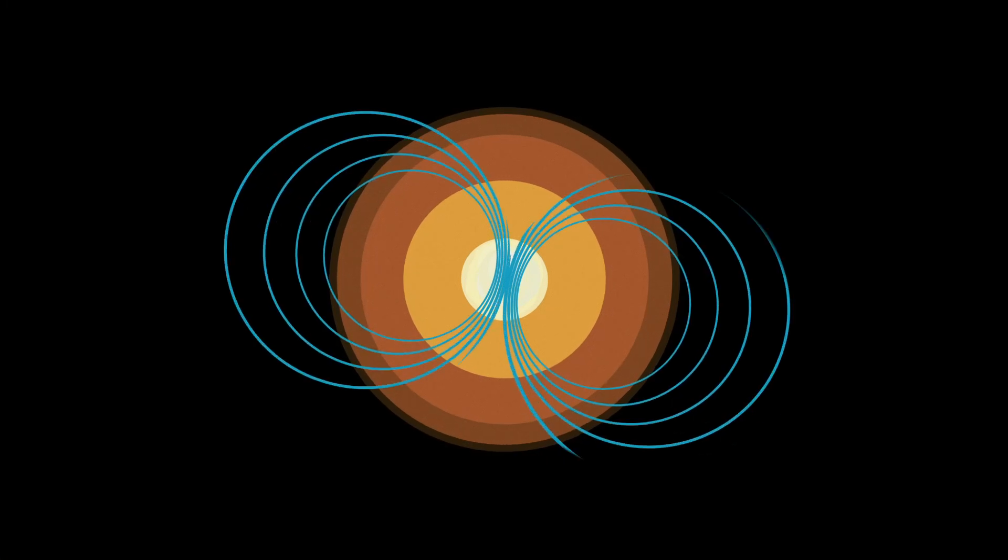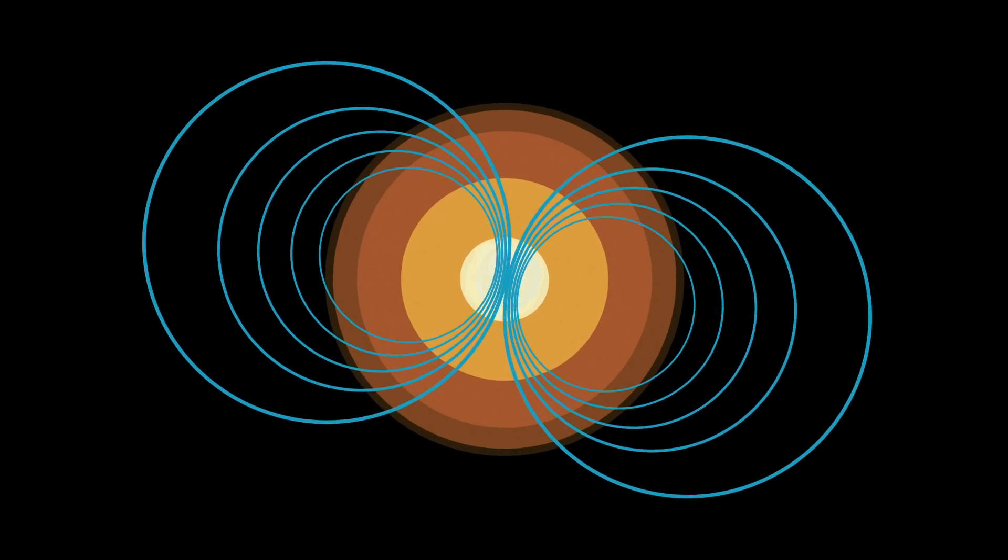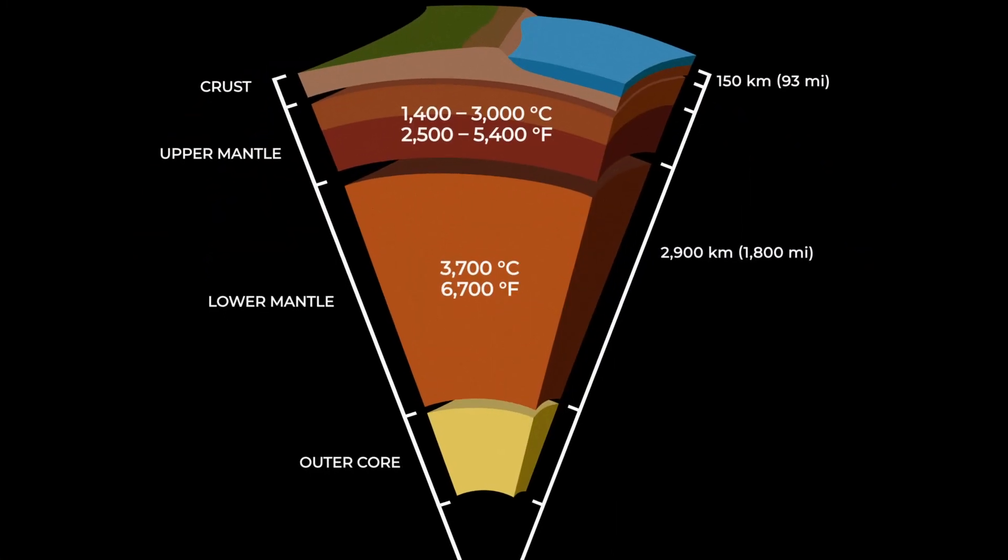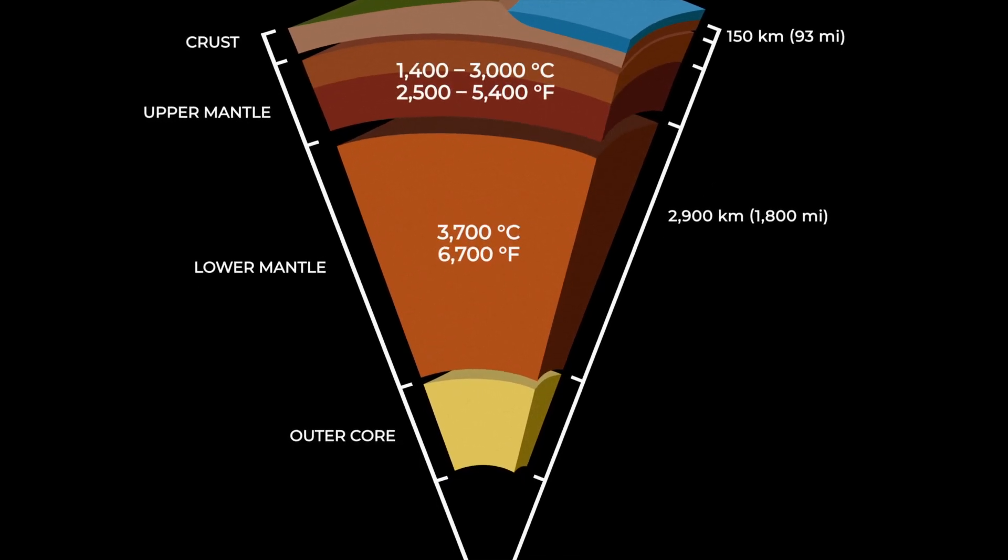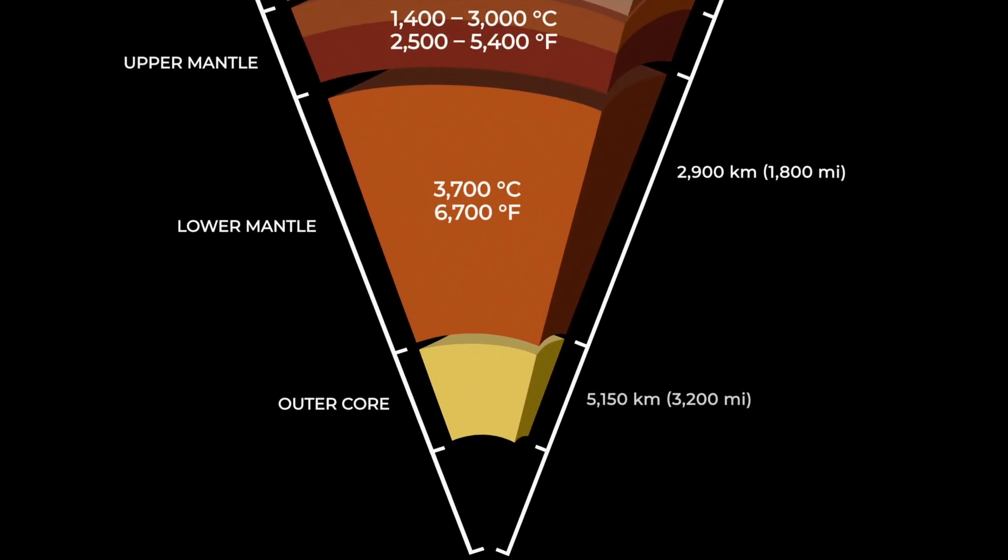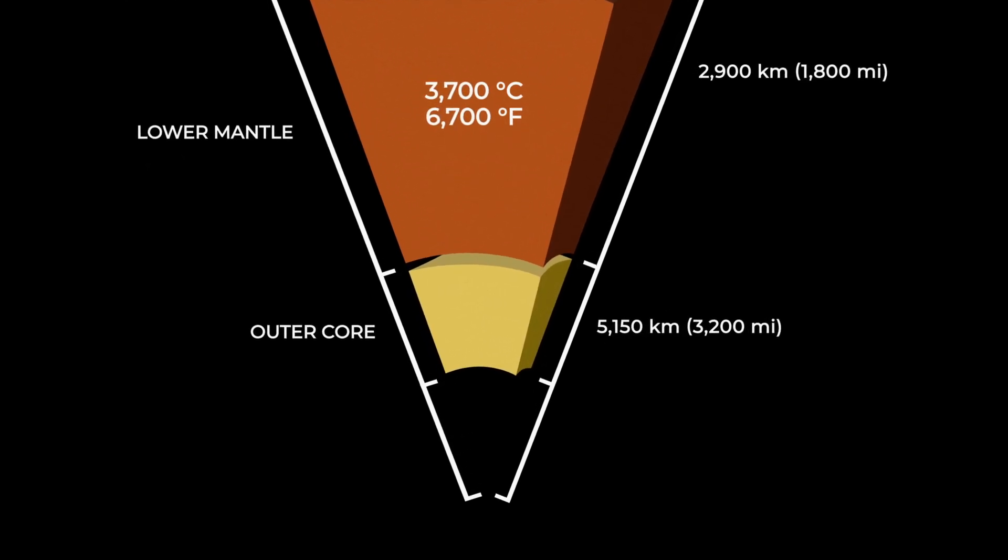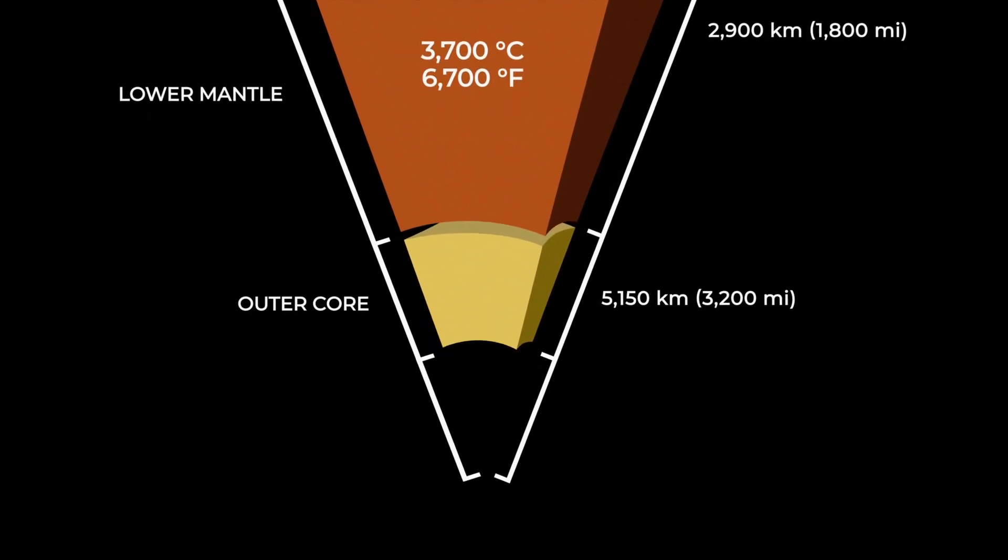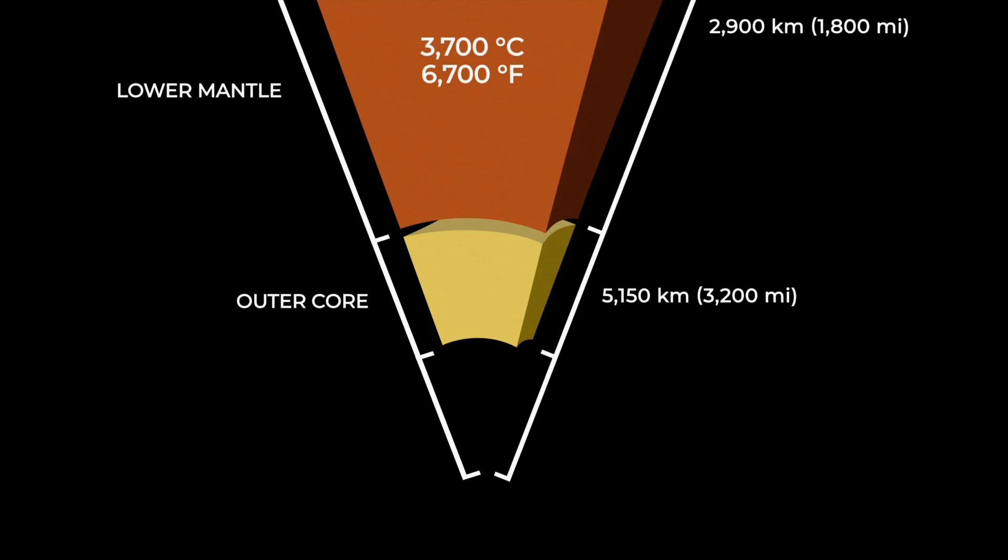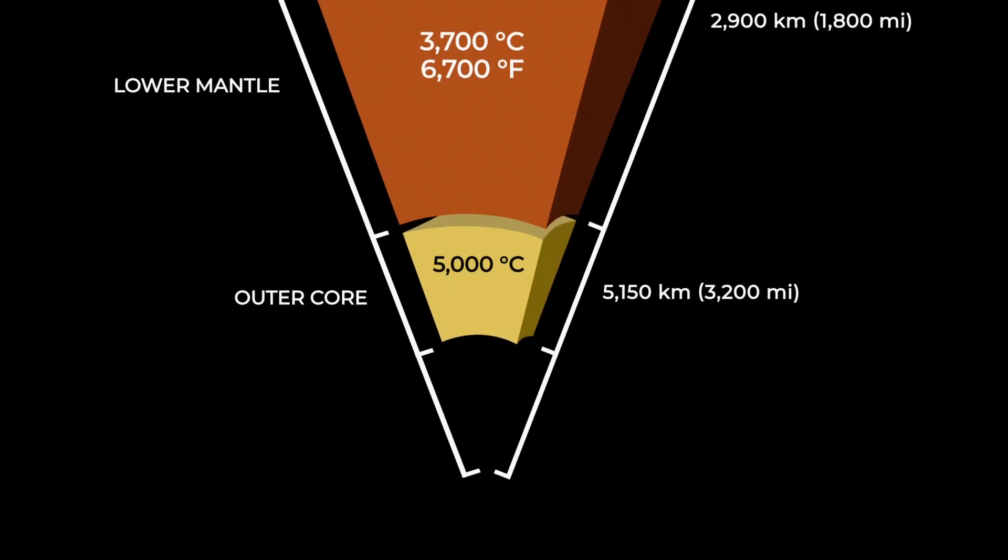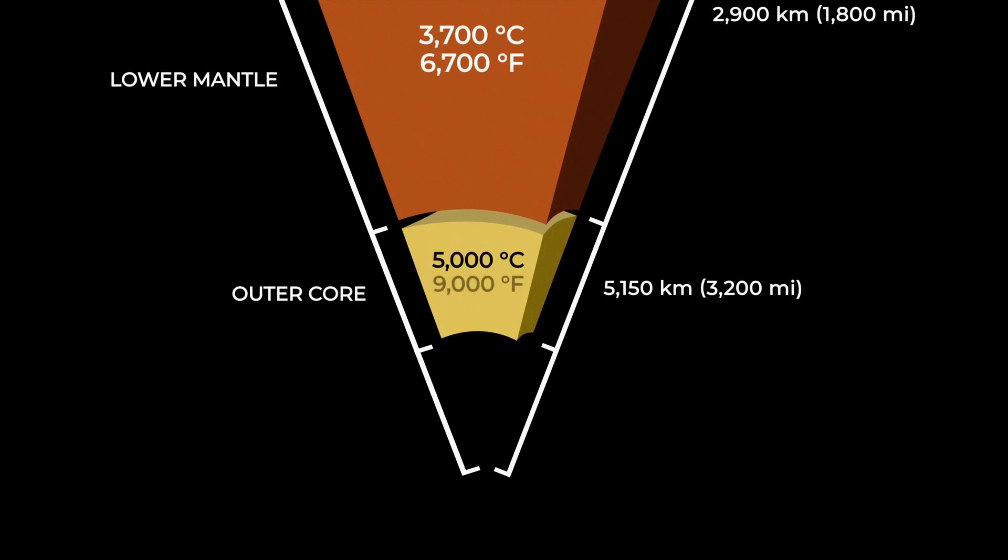The outer core, from the bottom of the mantle, extends to a depth of 5150 kilometers or 3200 miles, and can reach temperatures of up to 5000 degrees Celsius or 9000 degrees Fahrenheit.